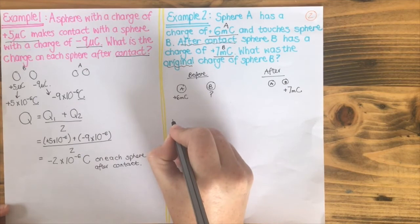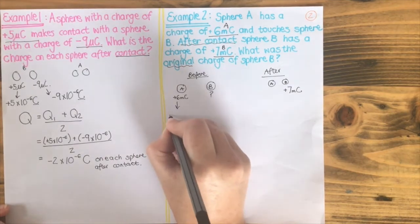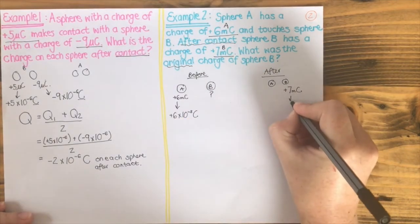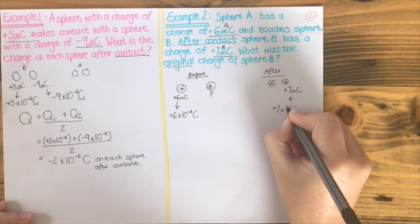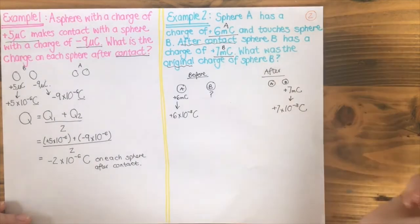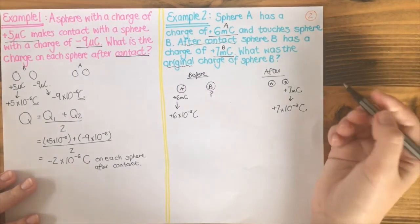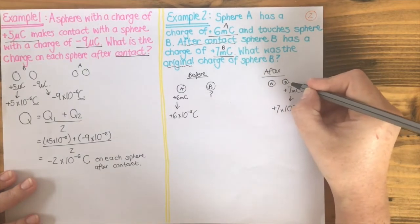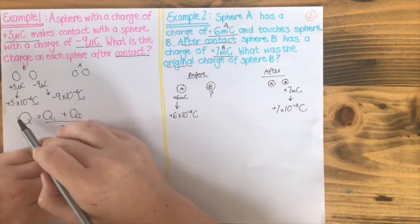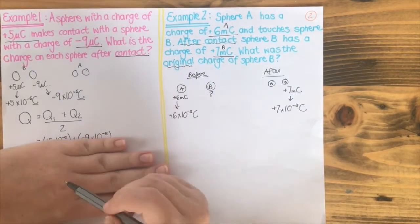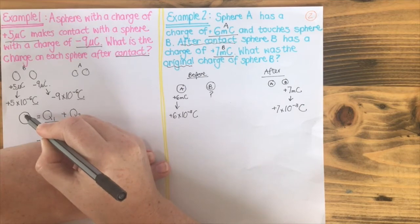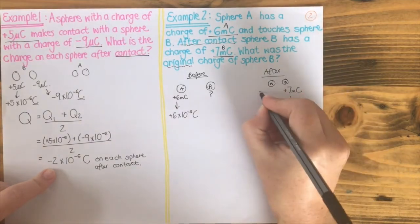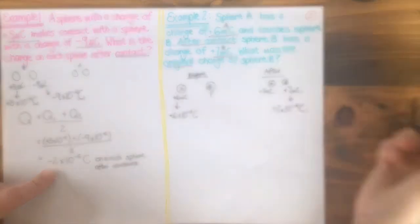Millicoulombs is times 10 to the power of minus 3, so let's convert that. Positive 6 times 10 to the power of minus 3 coulombs, and this becomes positive 7 times 10 to the power of minus 3 coulombs as well. The next thing we notice is that after, they've given us the charge only of sphere B. But looking at our equation, this Q after tells us that each sphere has the same charge after contact. So that would mean this one here is also 7 millicoulombs.